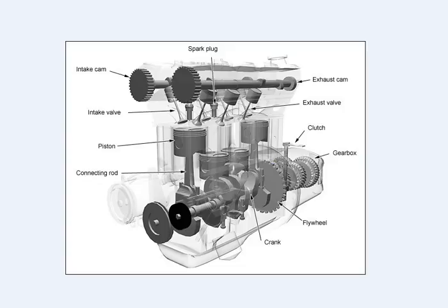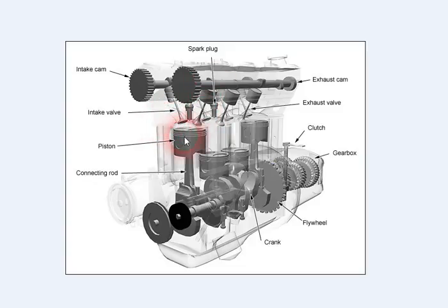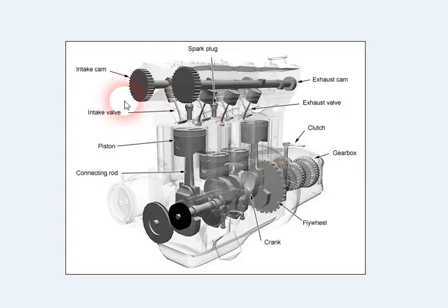There is also a timing belt which wraps around the intake cam and the exhaust cam, and by the timing belt we can regulate the opening of the intake valve and the exhaust valve. Coming next to the engine cylinder — it basically contains the piston, which is connected by a connecting rod to the crankshaft. The crankshaft in turn is connected to the flywheel, and then a clutch is present after the flywheel, followed by the gearbox assembly.